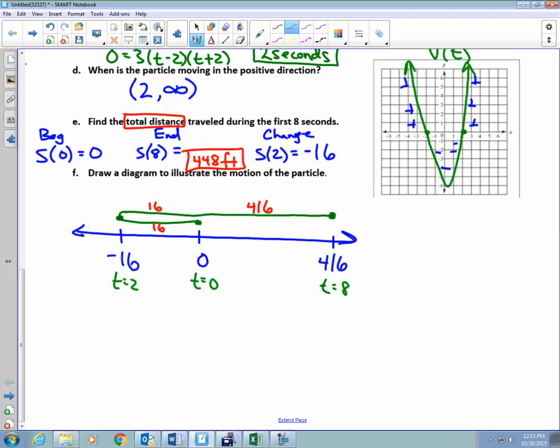And this is a good example of my drawing. These are some of the most common questions that you would be asked. s(8) was 416. That means that the total distance traveled was 448 feet. What's the displacement of the object? 416. It's 416 feet from where it started, but it's traveled a total of 448 feet. See the difference? Displacement and distance are different.